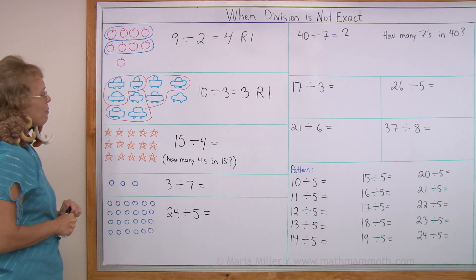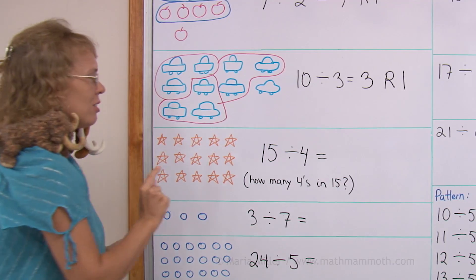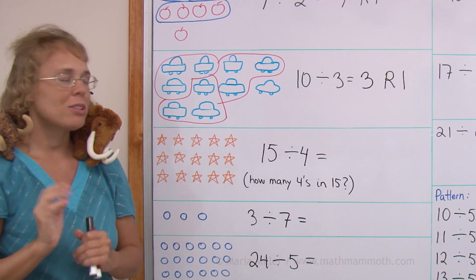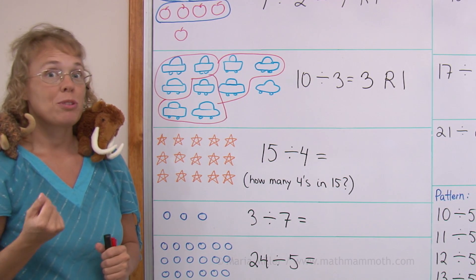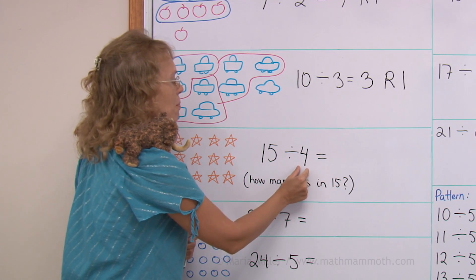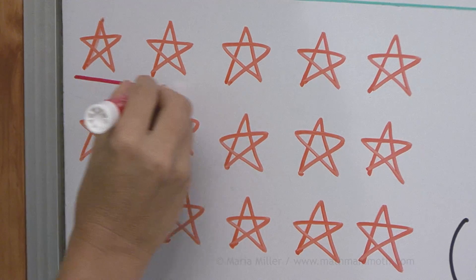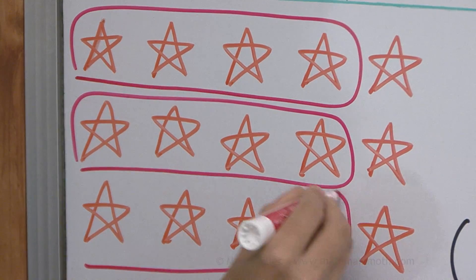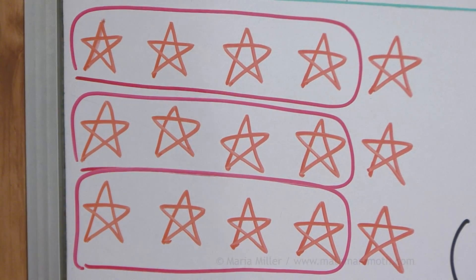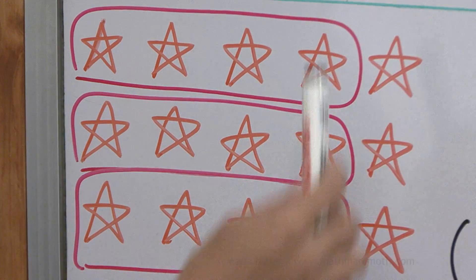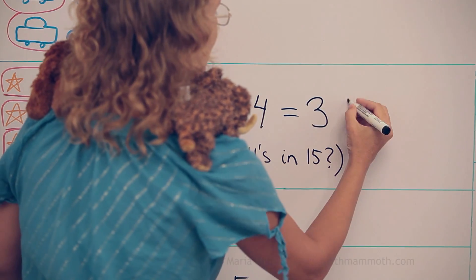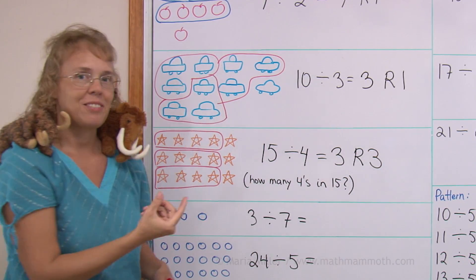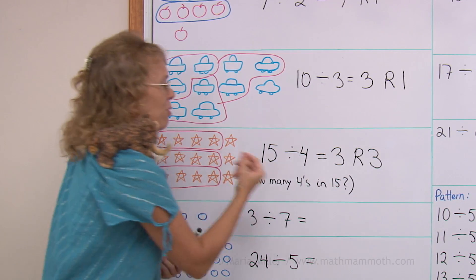Now in this problem, we want to think in a little bit different way. We are not going to think of sharing division where we would divide 15 between four persons. Instead, we are going to think of making groups of four. How many groups of four can I make out of 15? And for that, I can make groups of four like this. A group of four, a group of four, and a group of four. So I get three groups and three left over. The answer is three, remainder three. This is the same thinking as how many fours are in 15.